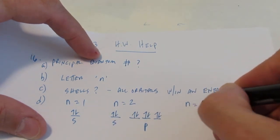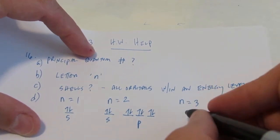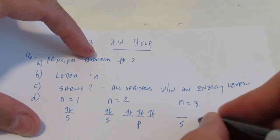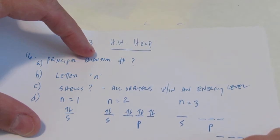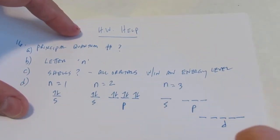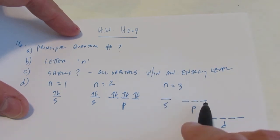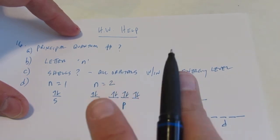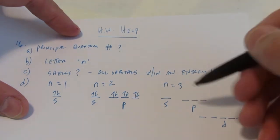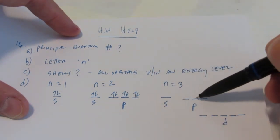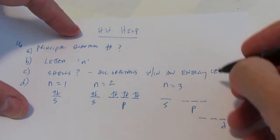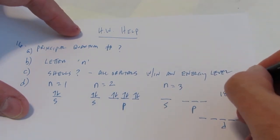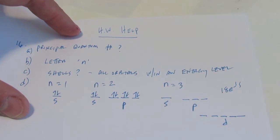And then when we go to the third energy level, you better know that there's an S sublevel, a P sublevel, and a D sublevel. Now the D has five orbitals, the P has three orbitals, and the S has one. You can put two electrons each. So let's see, one, two, three, four, five, six, seven, eight. That's nine orbitals, two electrons each. I can hold eighteen electrons in a third energy level.